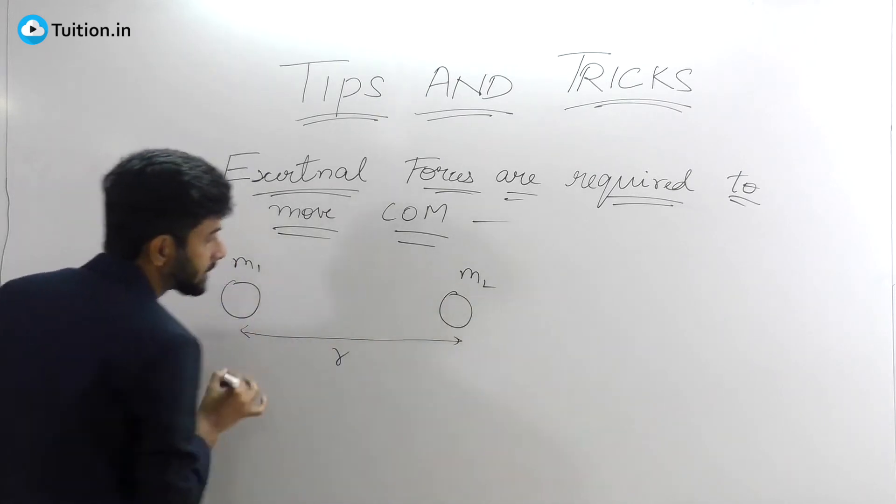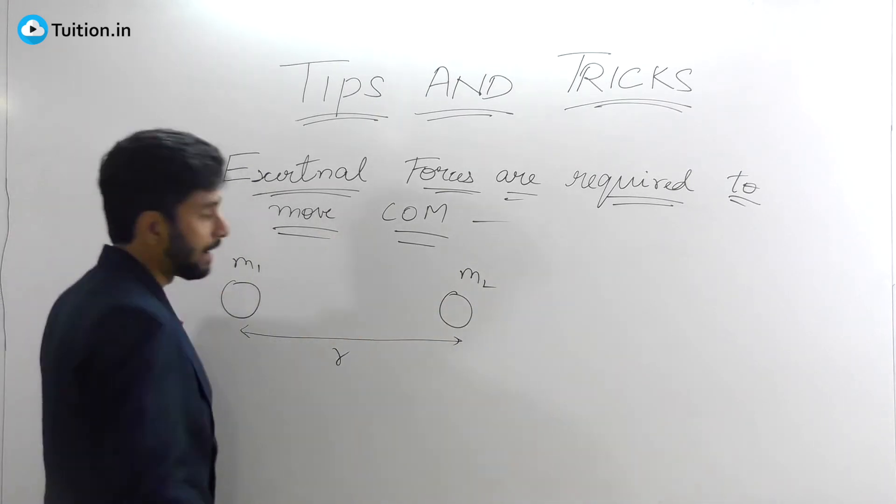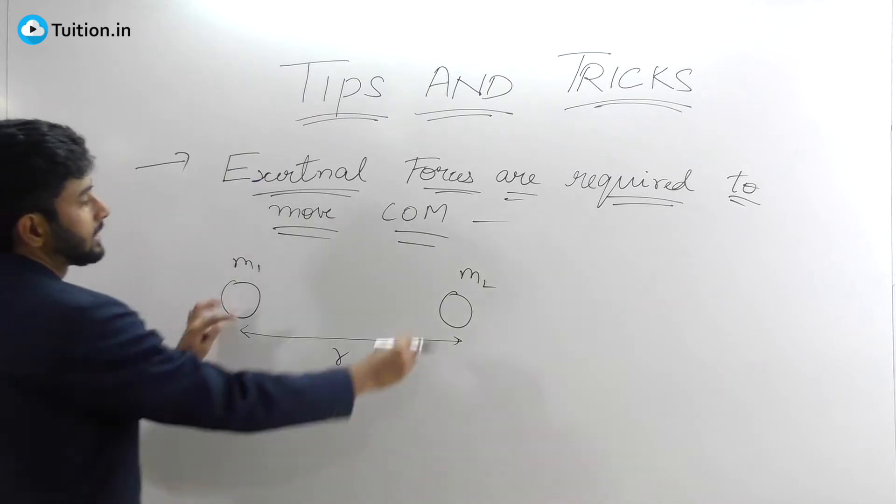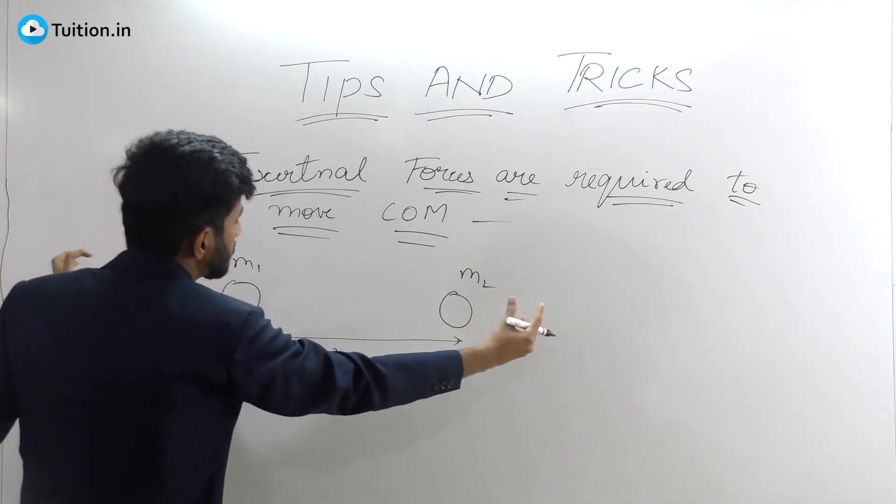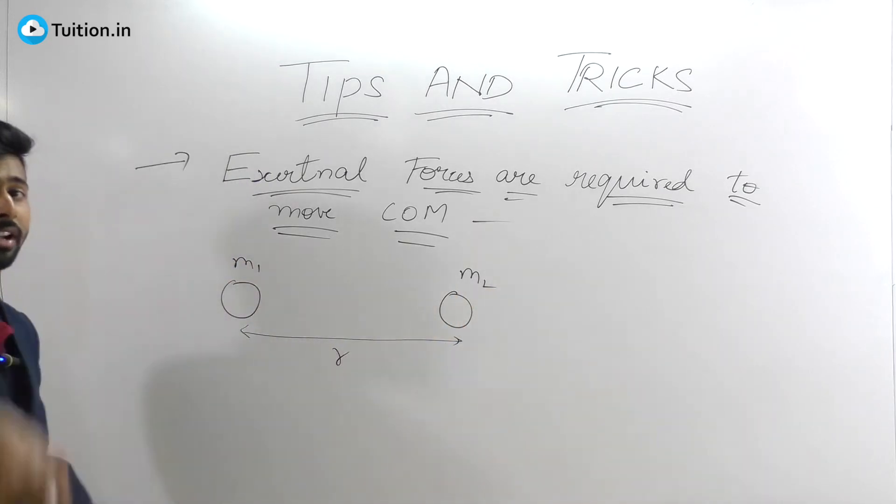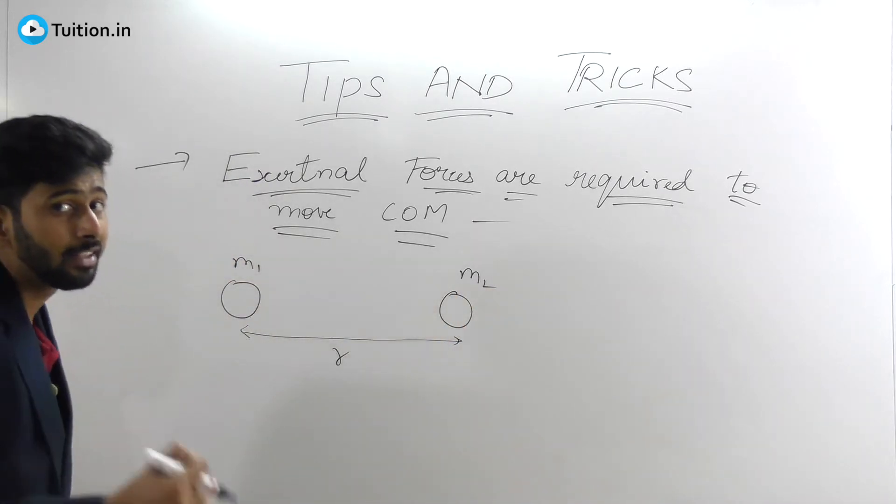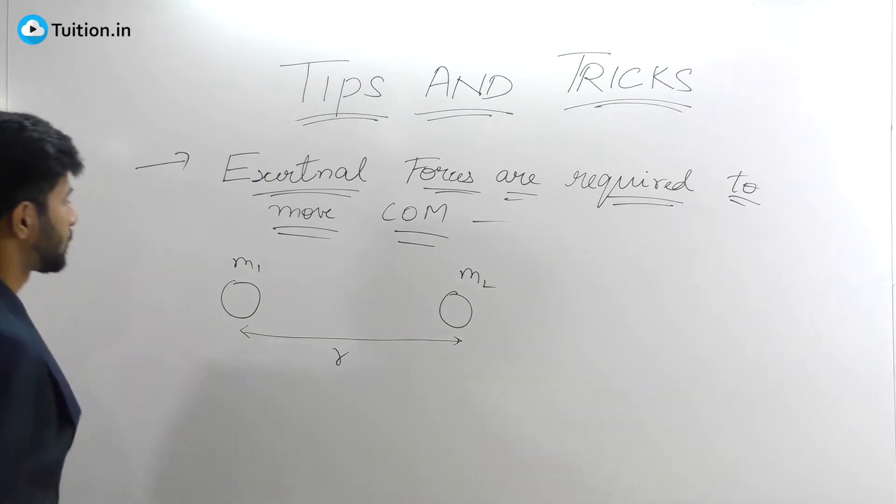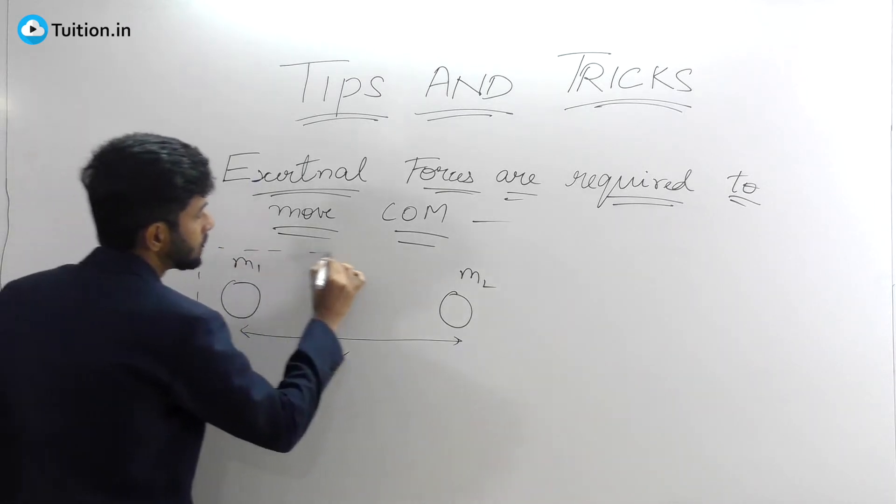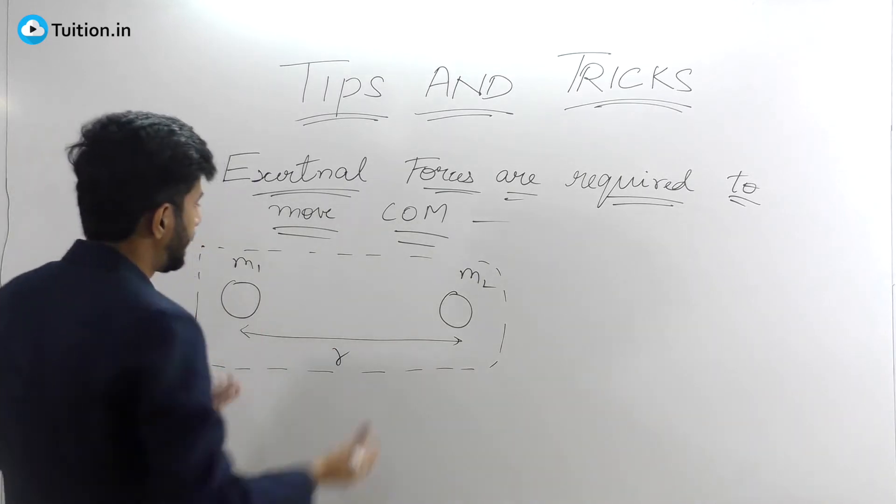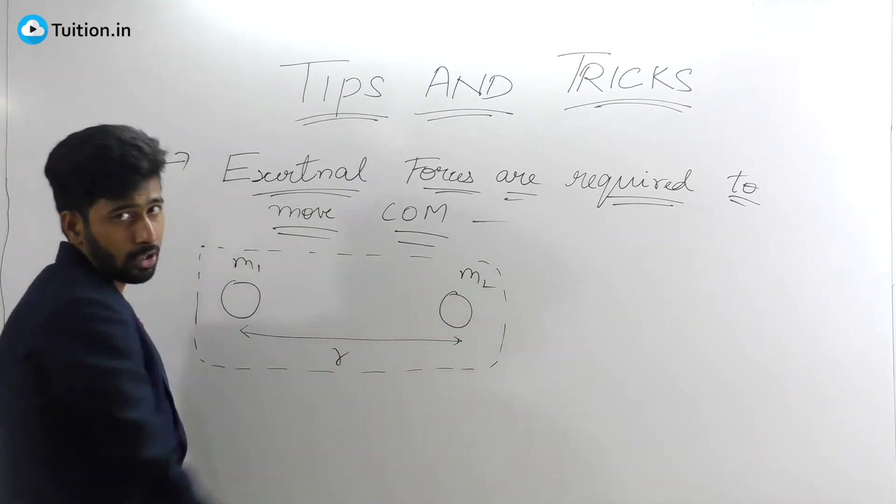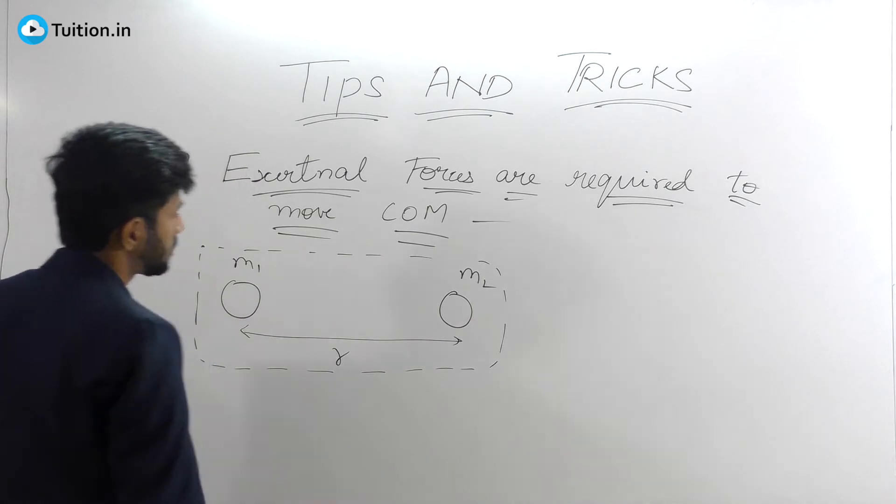You have these two masses here. It's a problem of gravitation. They might ask you that let's say these two are left like this, and by mutual attraction they just come together and they collide. What is the point at which they will collide? Your answer without thinking should be center of mass. Why? Because this is an isolated system. If there is no external force acting, if I leave them, there are only internal forces of attraction and they can't change the position of center of mass.